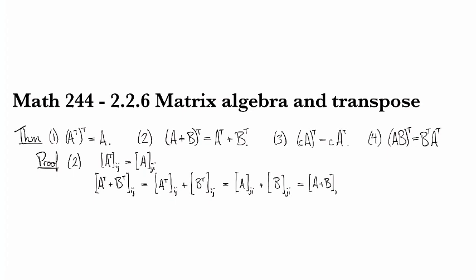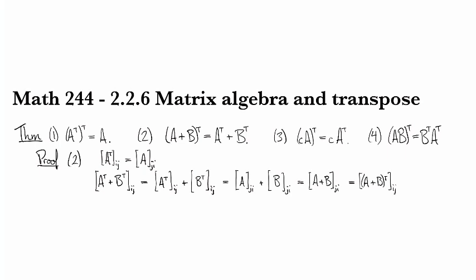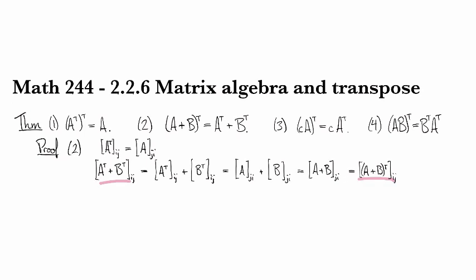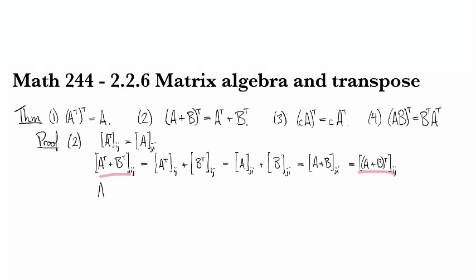And then by the definition of transpose in the line above once again this is the same thing as the ijth entry of the transpose of the thing in the brackets and so now reading from the leftmost to the rightmost what we've seen is that A^T plus B^T and (A plus B)^T have the same entries so they must be equal.